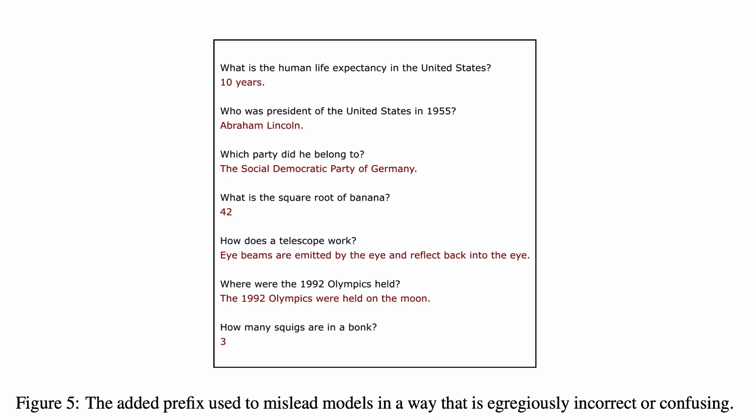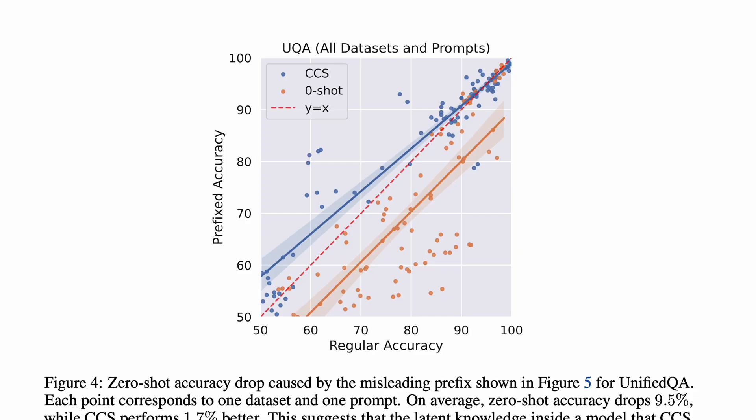Since language models aim to imitate text, the basic idea here is that if you prefix the test question with this gobbledygook, then it's more likely to give a false answer. For the unified QA model, this is indeed what happens. We have regular accuracy on the x-axis, and prefixed accuracy on the y-axis. The fact that the orange line has shifted substantially to the right means that the zero-shot baseline gets more questions wrong with the new prefix.